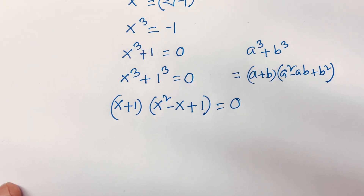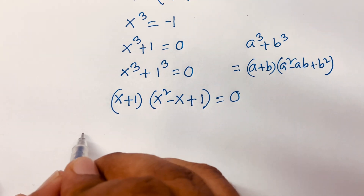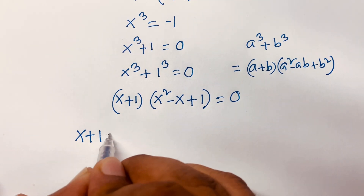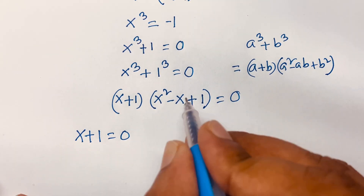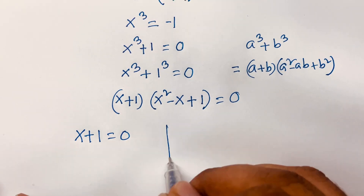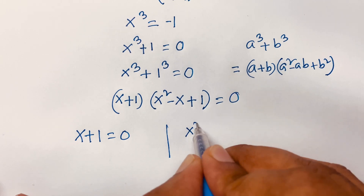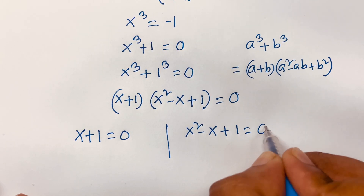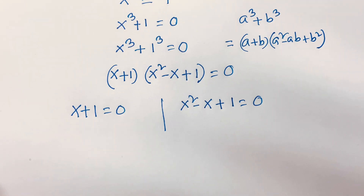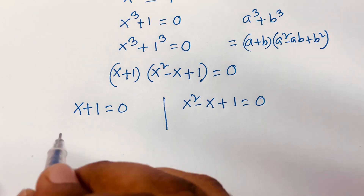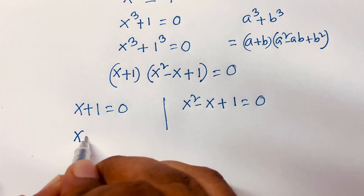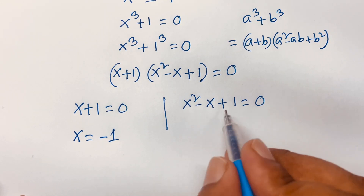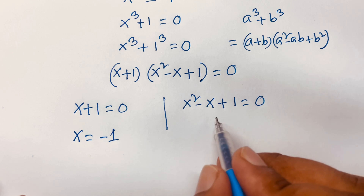Then I can say here are two terms. Our first term gives x plus 1 is equal to 0, and the other case gives x² minus x plus 1 is equal to 0. From the first term, x is equal to minus 1, and the second is a quadratic equation.